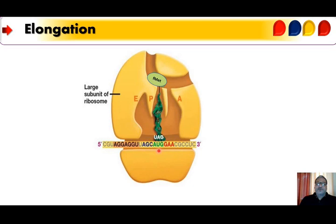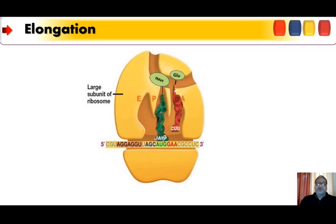The next codon in the mRNA is positioned in the A site. The elongation of the polypeptide chain occurs in three steps called the elongation cycle: aminoacyl tRNA binding, peptide bond formation, and translocation. When a new codon appears at the A site, the corresponding aminoacyl tRNA for the second codon binds to the A site via complementary pairing. For example, the codon GAA and anticodon CUU, carrying amino acid glutamine. This is the first step: aminoacyl tRNA binding.